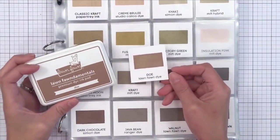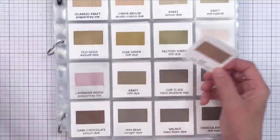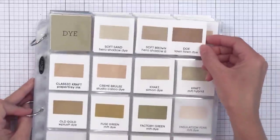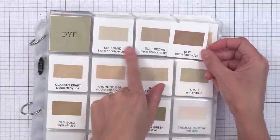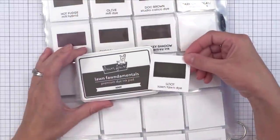We also have the color Doe. This is a great brown color for stamping critters, so it works great for Lawn Fawn. You can see it's a little more red than some of the other medium color browns that I have, but it works great as a darker version of the Soft Sand and Soft Brown from Hero Arts. Those three together would be beautiful.